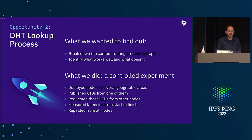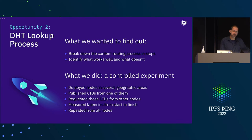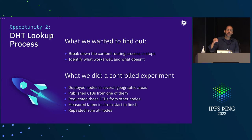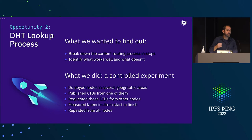Another thing we did was look at how the DHT lookup process works. The DHT lookup is when you're trying to retrieve something from the network — as a user, you request a CID and want to get the content back. There are several steps taken by the network and protocols to make this happen, and we wanted to see if some of these steps are problematic or if there's a bottleneck somewhere.